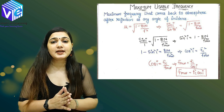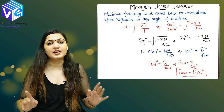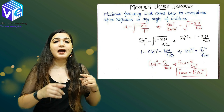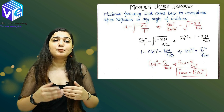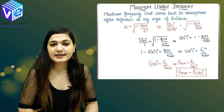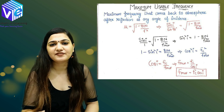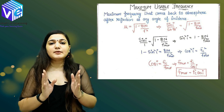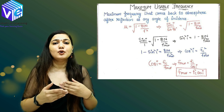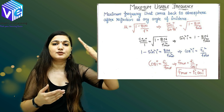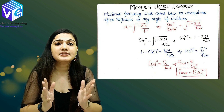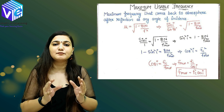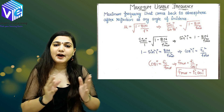Now coming to the maximum usable frequency. In this case, we do not have vertical incidence — that is the key difference. We can have any angle of incidence and the wave will still reflect back. For the reflection condition, I take R equal to 90 degrees, so sin(R) equals sin(90), which is 1. The formula will be expressed in terms of angle of incidence I only, since I is a variable.